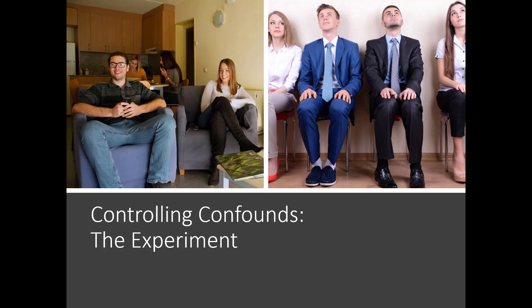The experiment is able to determine cause because of its ability to control for what are called confounds. The reason why none of the other research techniques can help us determine cause is because too many things are changing. We don't know which of the things that changed caused the result. In the experiment, we control for everything except a single variable, and we allow that one variable to change. If nothing else changes, we know that any differences we see are from the one variable we allowed to change. The experiment controls confounding variables.